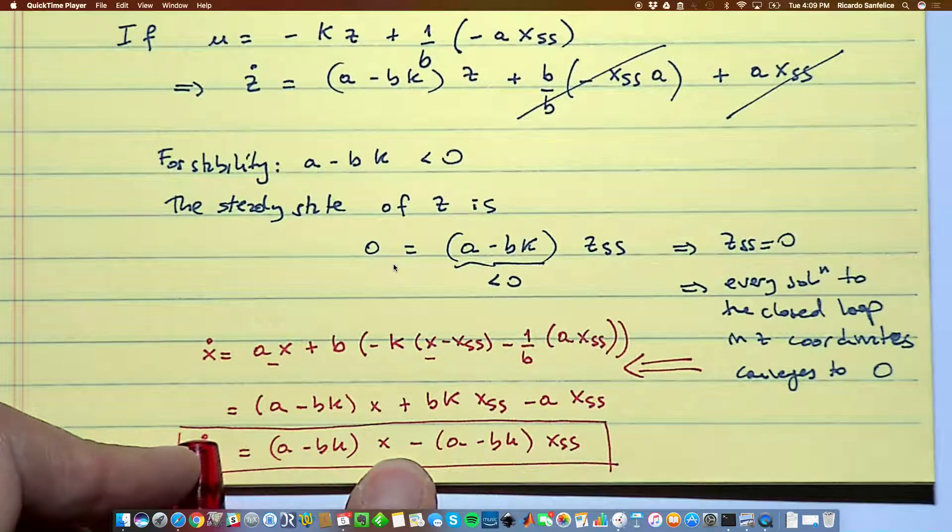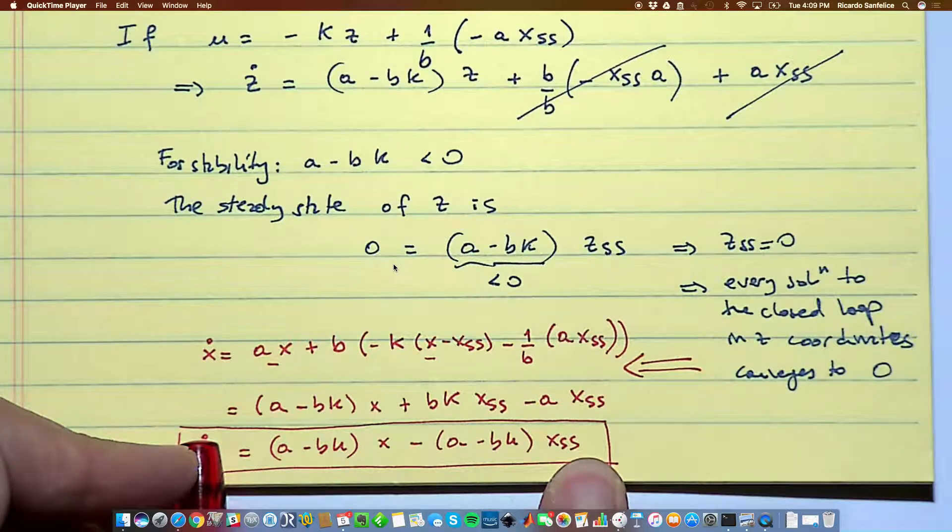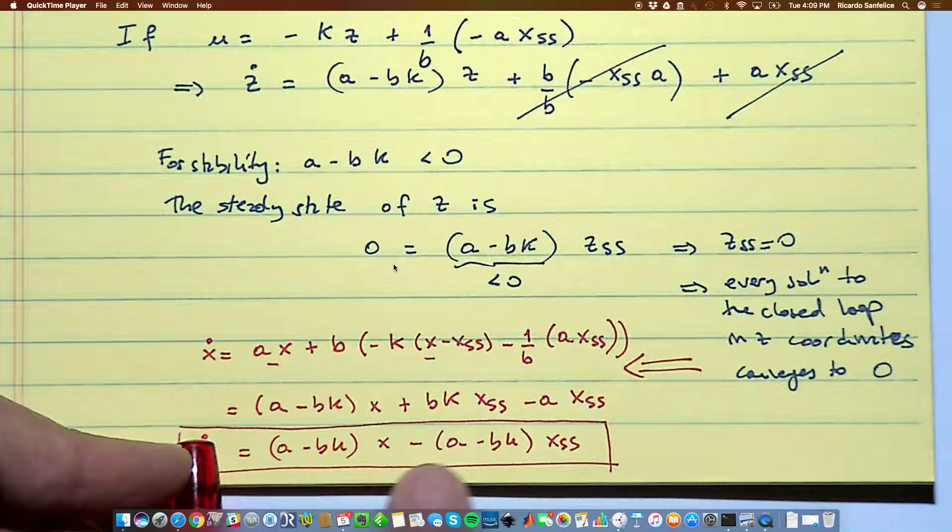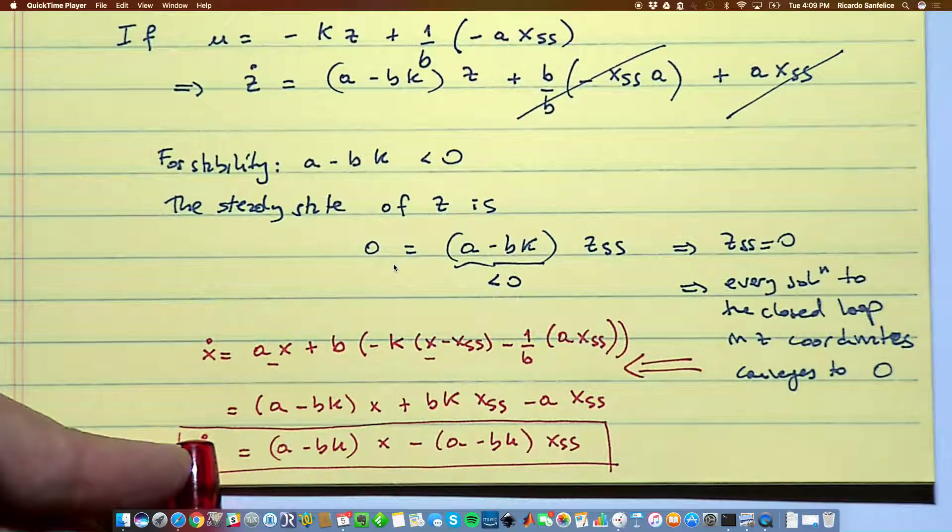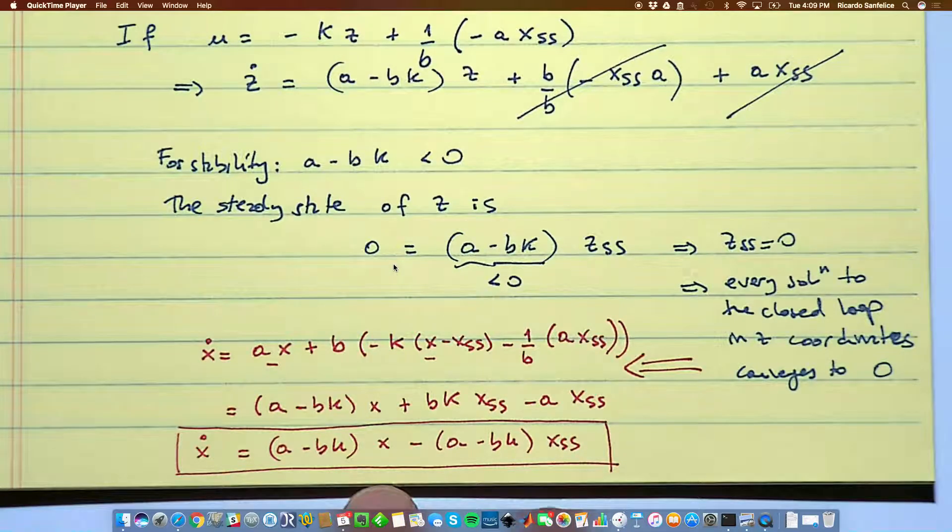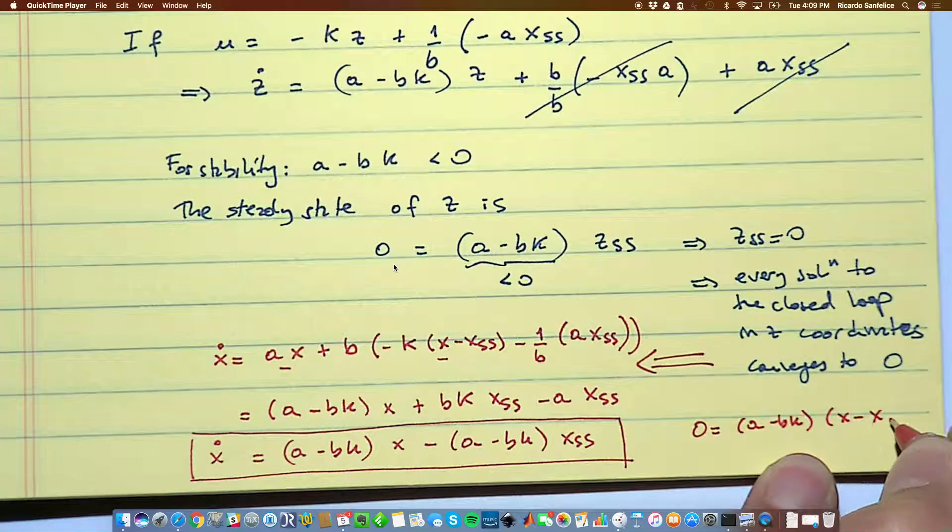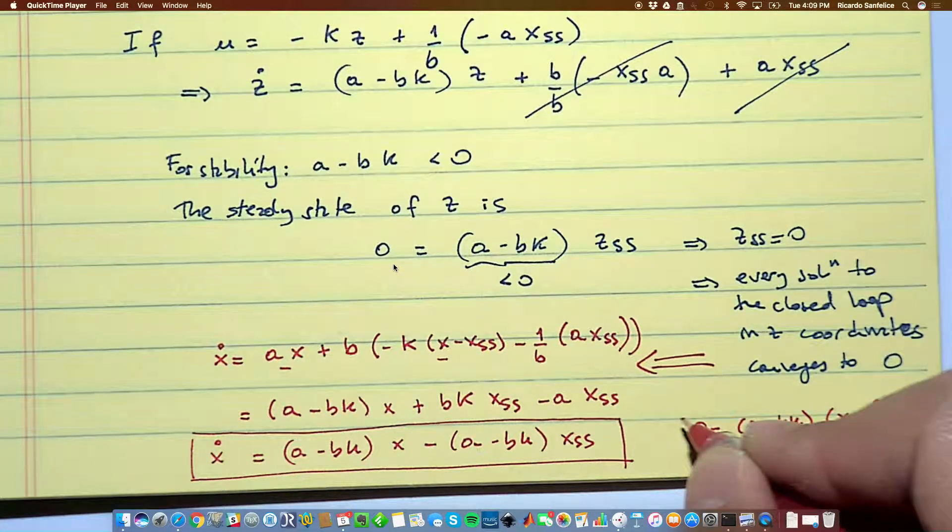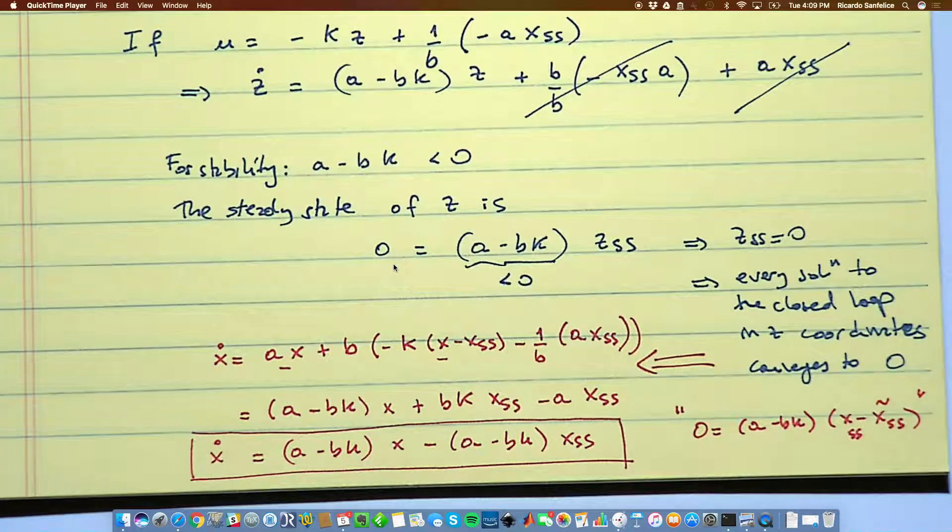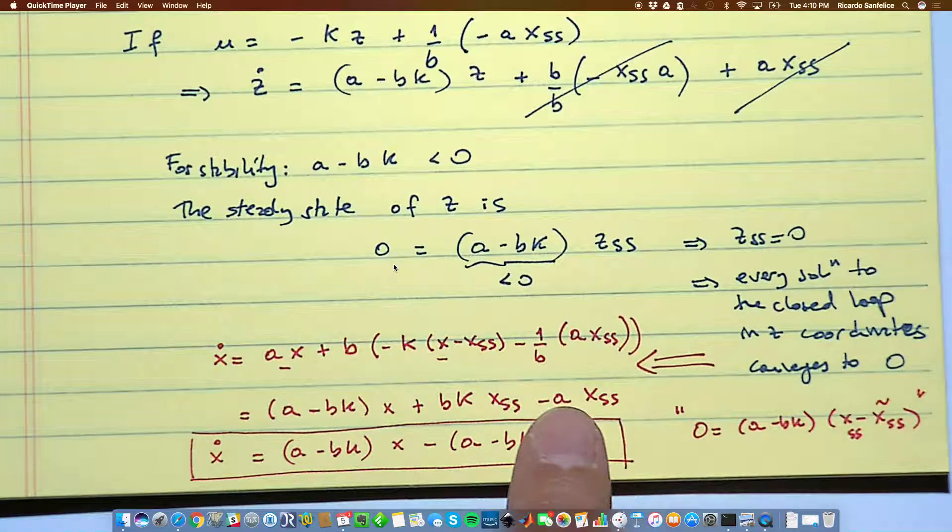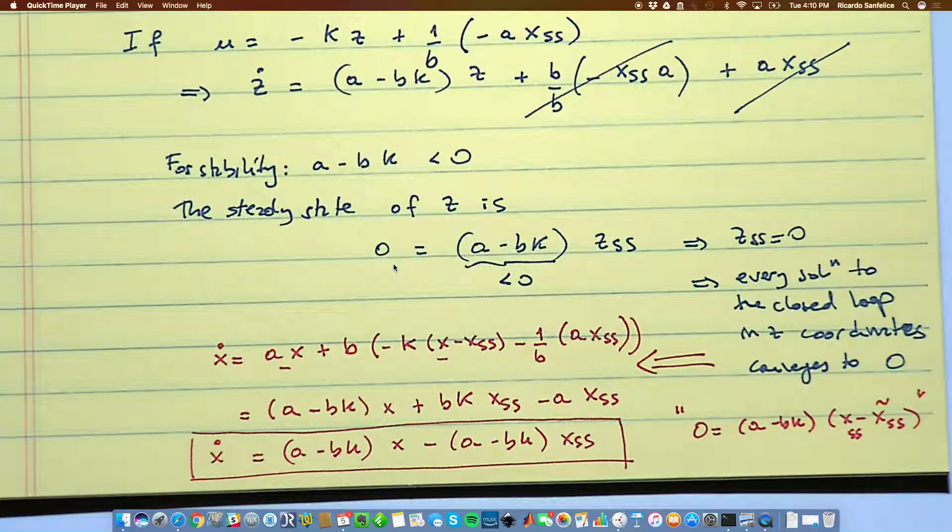Because now when I plug 0 here, this will be, call it x_ss with some obvious annotation. And this x_ss tilde, something that I started with as the desire, but since a minus b k and a minus b k are in front, these are going to need to be equal because a minus b k is less than 0. It cannot be 0. So the steady state equation for this will be 0 equal to a minus b k, all that times x minus x_ss. And then again, I call it tilde ss. And then they have to match. Because for this to be 0, this cannot be 0, otherwise we lose stability. This has to be 0. So this solution here was essentially inverting the input coefficient and then applying enough compensating factor for the steady state.